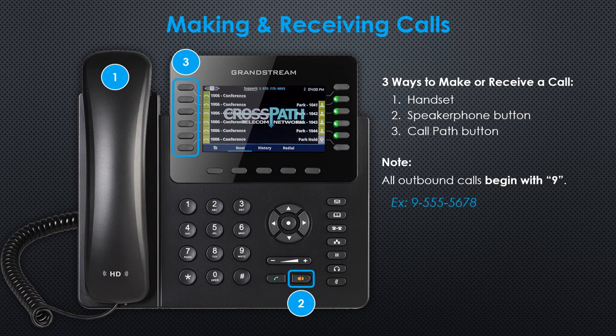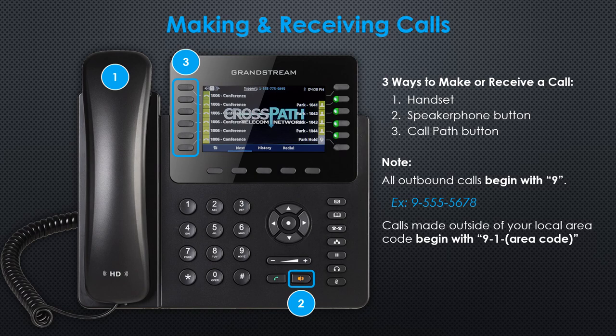Here's an example. Calls made outside of your local area code must begin with 9, then 1, followed by the 10-digit telephone number. Here's another example.